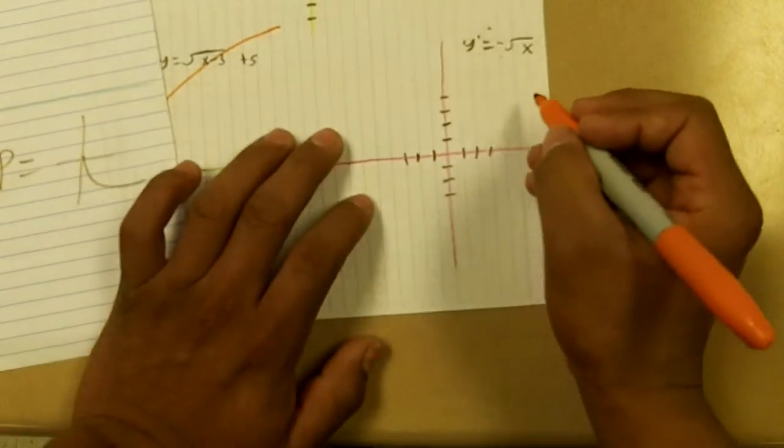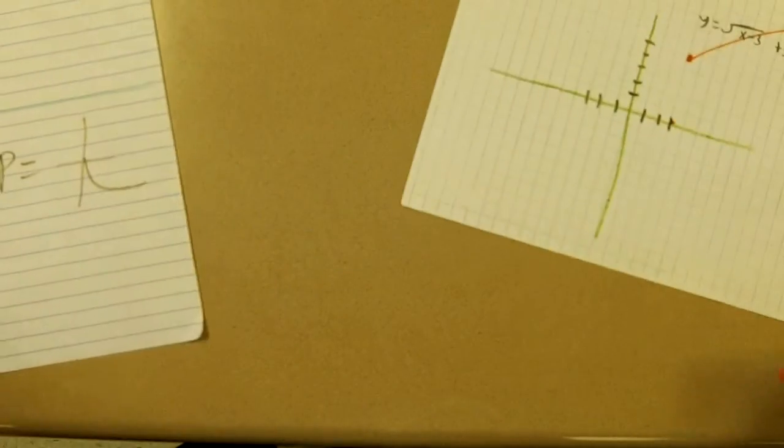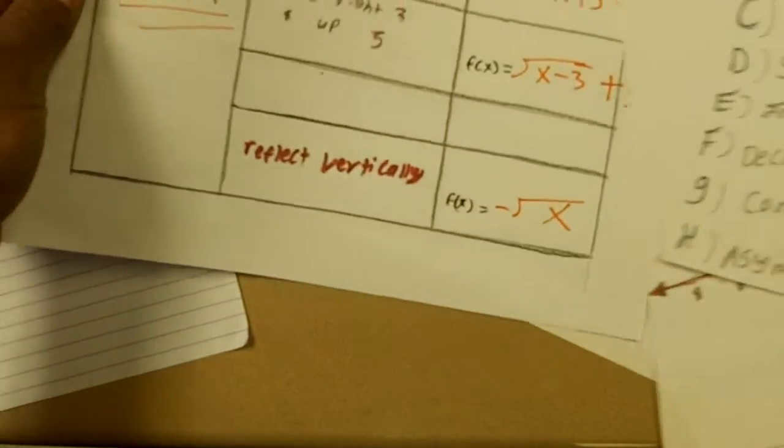And then for this one we just do the negative x so we're just going to go like this and that is basically my whole equation.